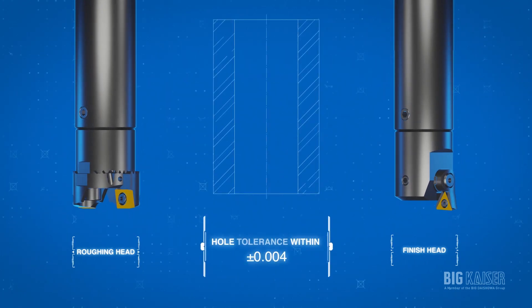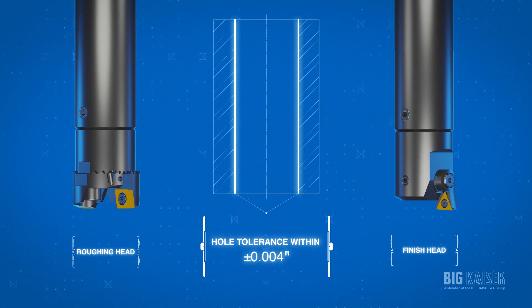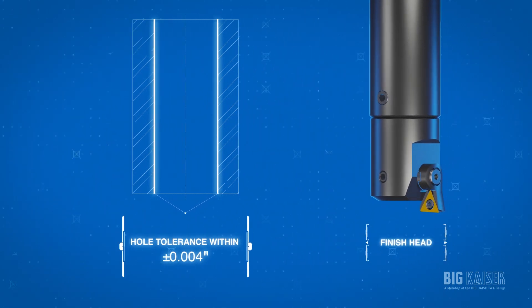If the diameter tolerance is tighter than about four thousandths of an inch, a finishing head with fine adjustment is required.